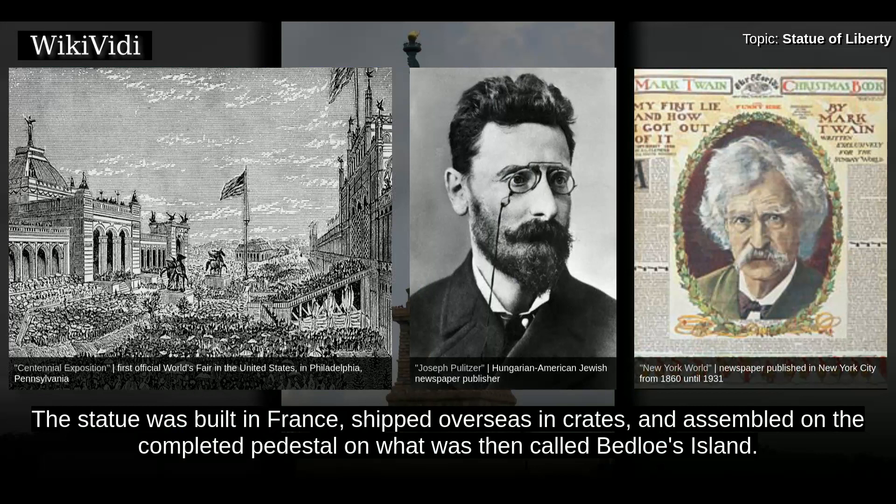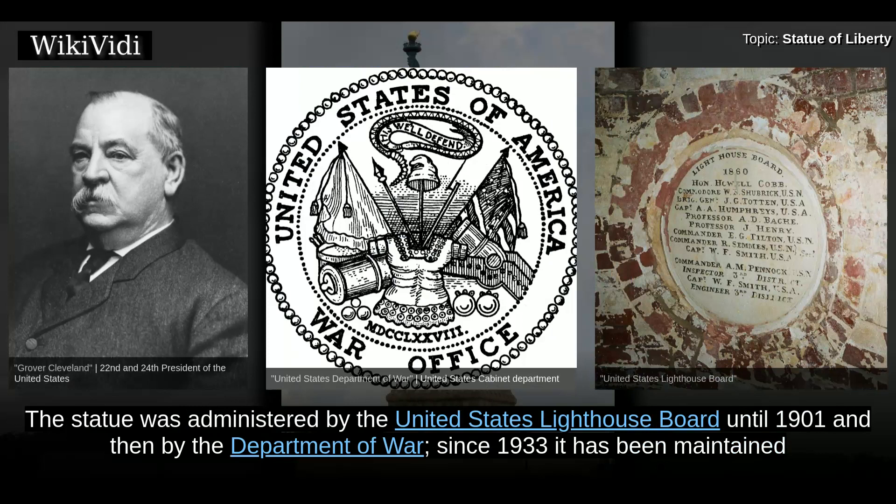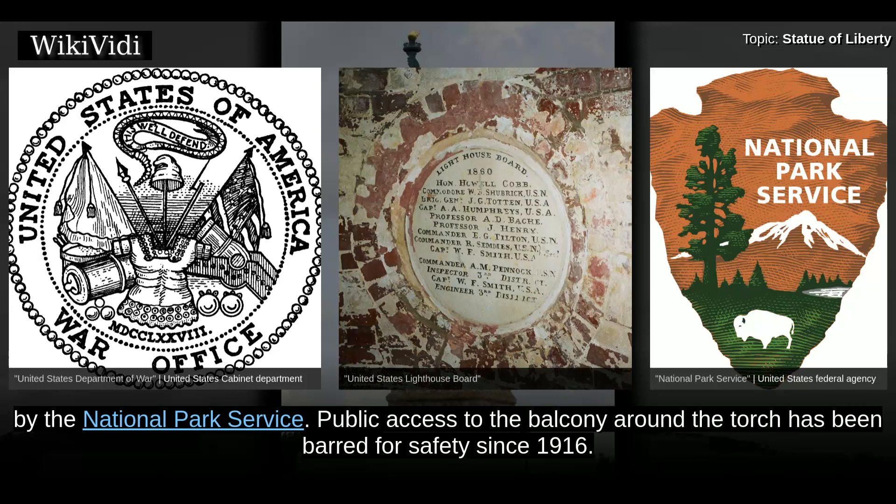The statue was built in France, shipped overseas in crates, and assembled on the completed pedestal on what was then called Bedloe's Island. The statue's completion was marked by New York's first ticker-tape parade and a dedication ceremony presided over by President Grover Cleveland. The statue was administered by the United States Lighthouse Board until 1901 and then by the Department of War. Since 1933 it has been maintained by the National Park Service. Public access to the balcony around the torch has been barred for safety since 1916.